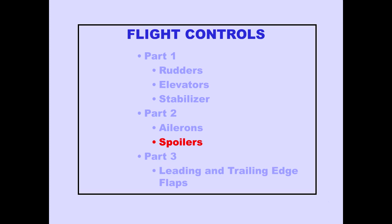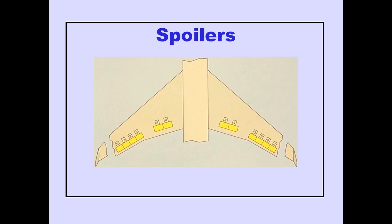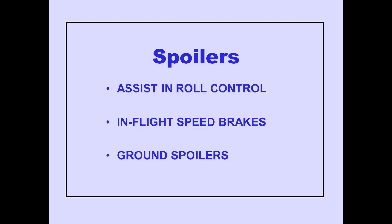Let's discuss spoilers. There are six spoiler panels on each wing. The spoilers are powered by Hydraulic Systems 2, 3, and 4. Spoilers assist the ailerons in roll control, and also function as in-flight speed brakes and ground spoilers.